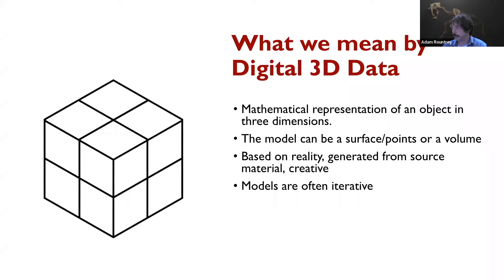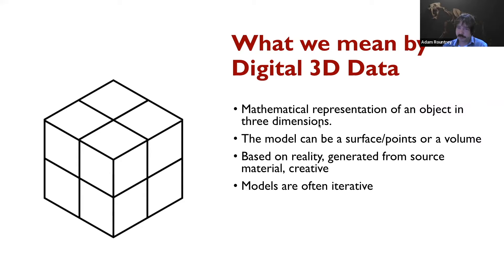Just to get it out of the way from the beginning: what is it that we're actually talking about when we talk about 3D data? There are digital 3D data — mathematical representations of an object in three dimensions. It could be a surface like a triangulated mesh, a point cloud, or a grid or array representing a volume like something from a CT scan. The data might be based on reality, like a laser scan of an object, or generated from source material like a document with measurements of an ancient building, or it could be completely creative and artistic. It's also important to note that models are often iterative, which adds complexity — there are different versions as it's being developed, or post-processing cleanup steps before you reach a final version.